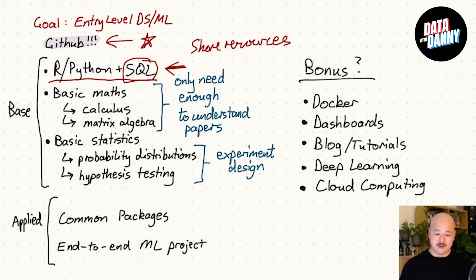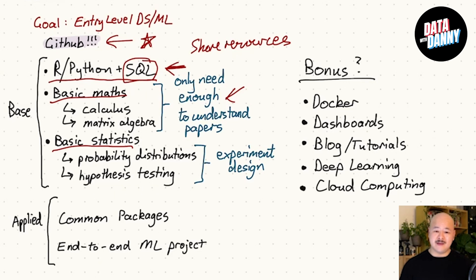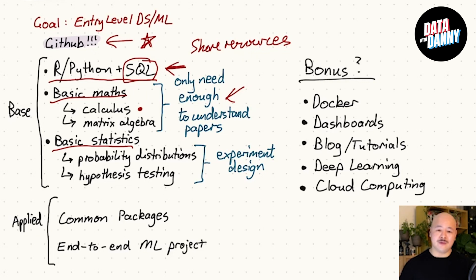You also need basic maths and basic stats. I know this is probably the most confronting component for people who don't come from a maths and stats background. For me, the only amount of math knowledge I needed was just enough to understand and read technical papers. The majority of it is just basic calculus and matrix algebra — that's pretty much all I remembered from my uni degree. I use them maybe once a month or week depending on if I'm working on a more technical project. It's really good to have those skills so you can read through a paper and understand it at a high-level conceptual level, and if you need to dive deeper, there's always Google and textbooks.